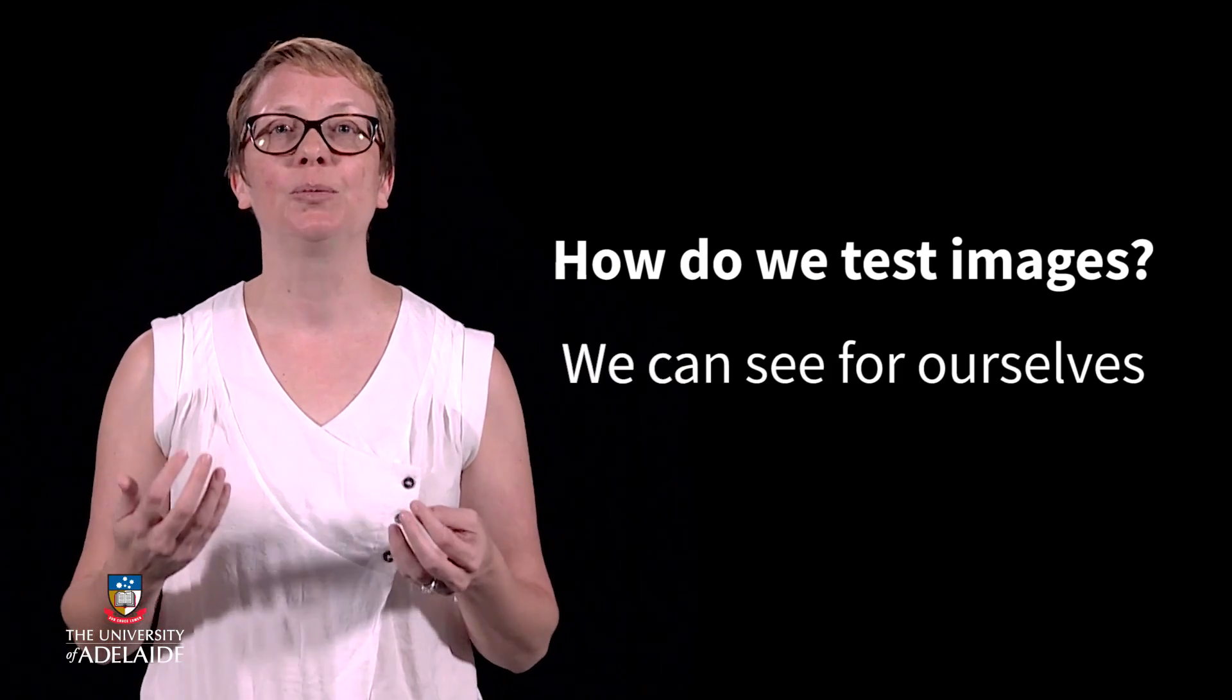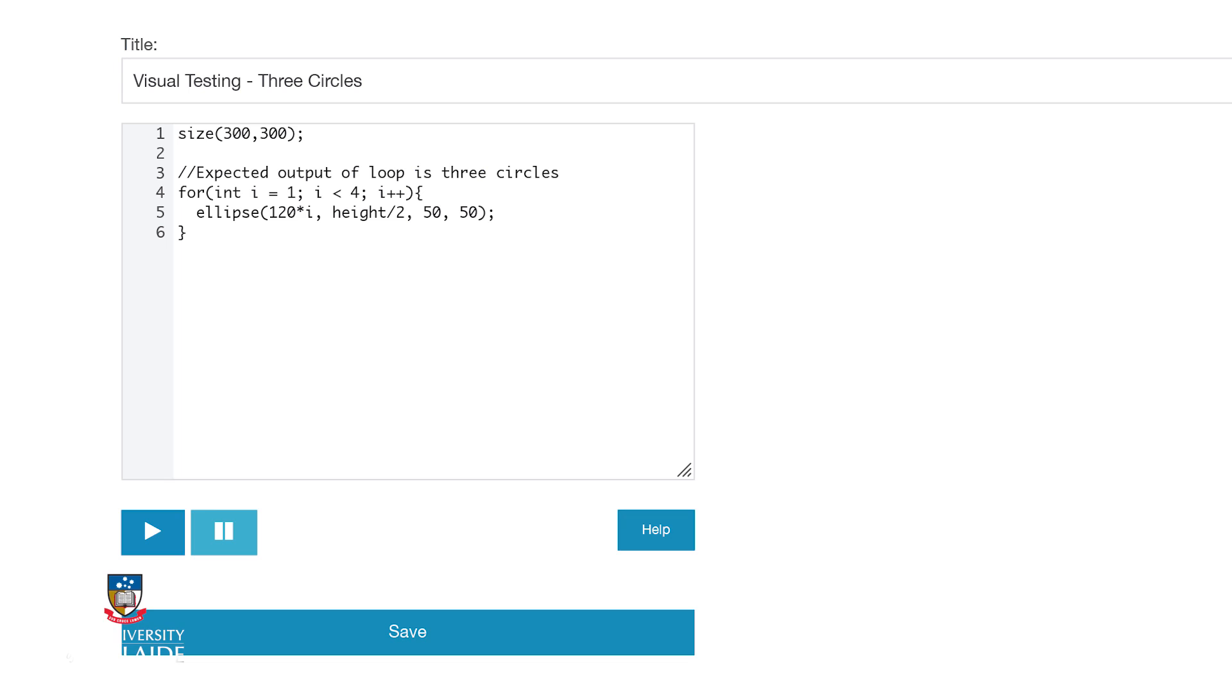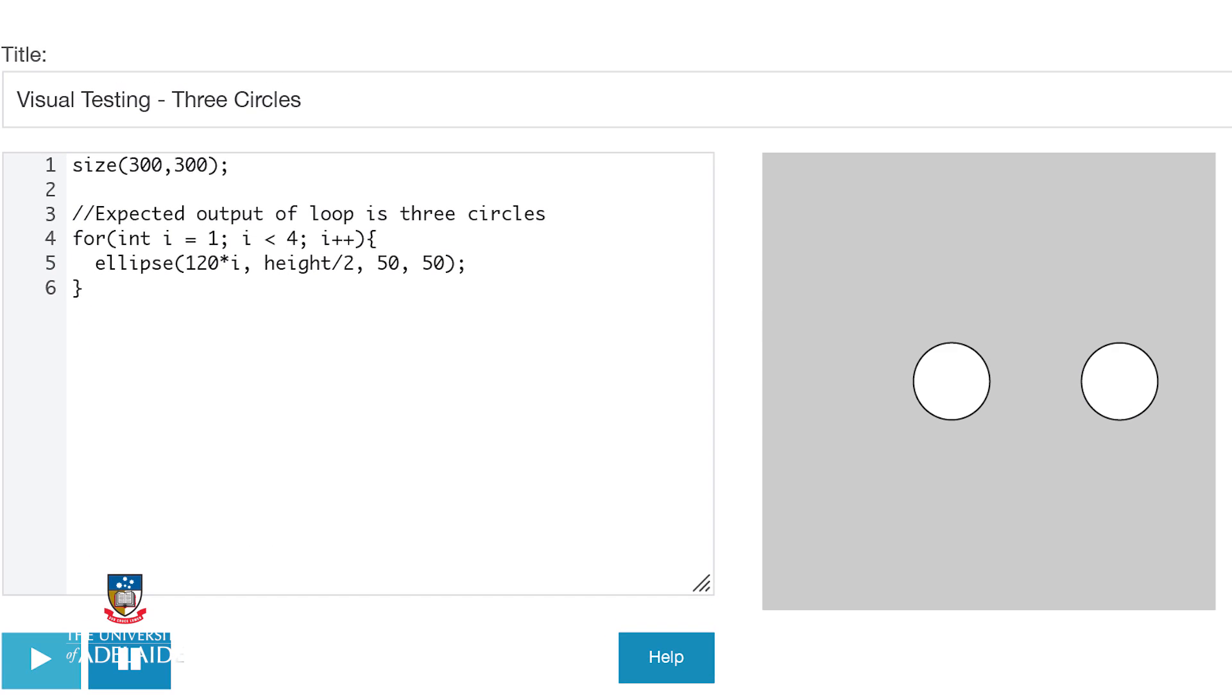However, we can see ourselves whether the image that we intended to produce is what we actually generated. One method we can use to test our images or data visualizations is to simply run our program and to critically observe the generated image that it matches our expectations.